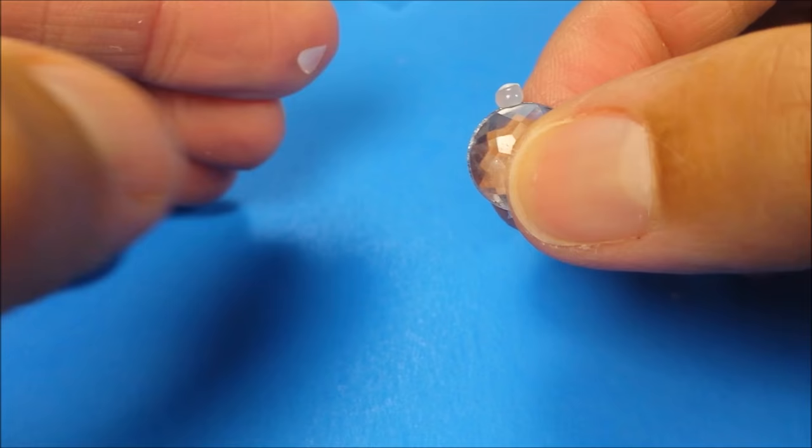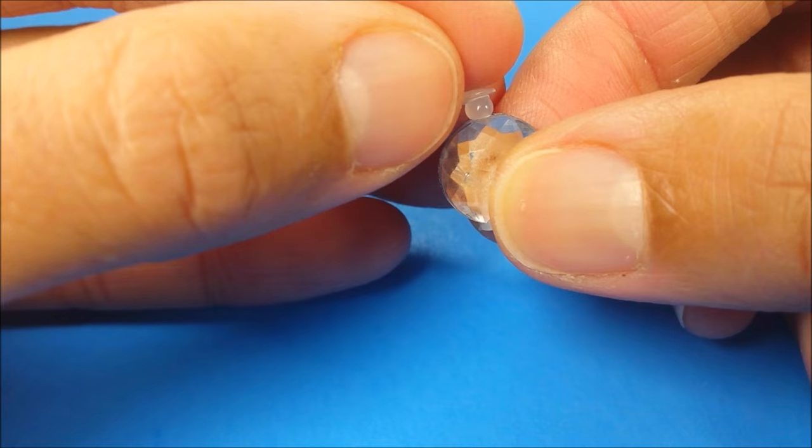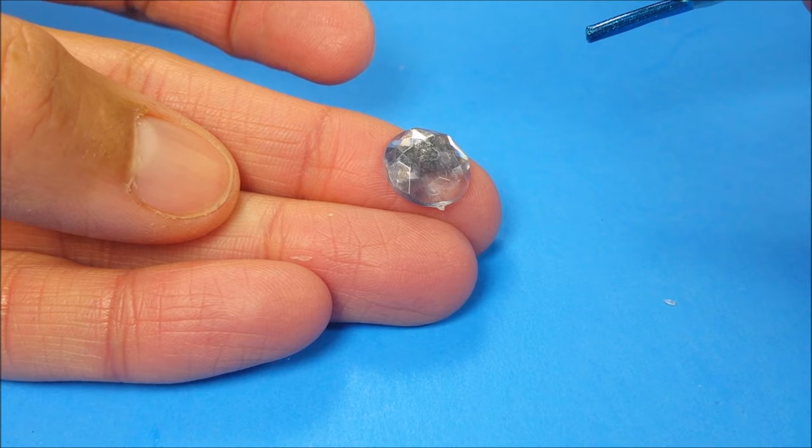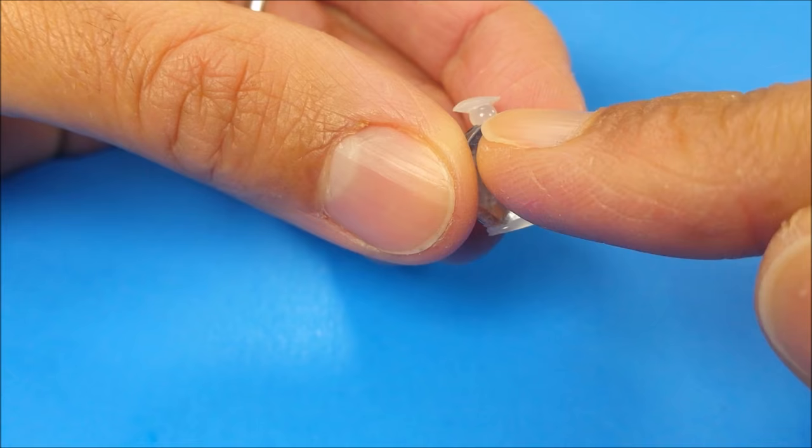And I can glue the little triangle to the top. And you can always paint your gems, just be sure and do it before you add the hot glue along the bottom and top.